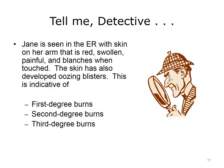Now let's put some of this information to use to solve the following mystery. Jane is seen in the ER with skin on her arm that is red, swollen, painful, and blanches when touched. The skin has also developed oozing blisters. This is indicative of which condition — first degree burns, second degree burns, or third degree burns? Second degree burns damage the outer layer and the layer underneath it, also referred to as partial thickness burns. They are pink or red, swollen, and painful, and develop blisters that may ooze clear fluid. The burned area may blanch when touched.